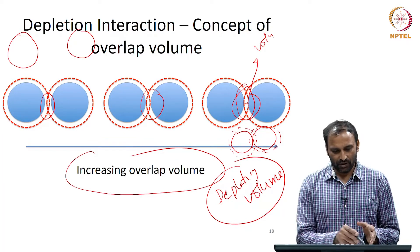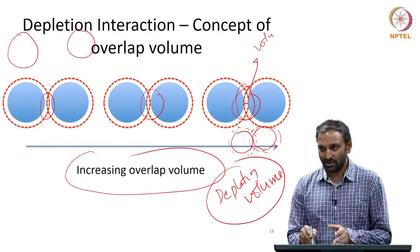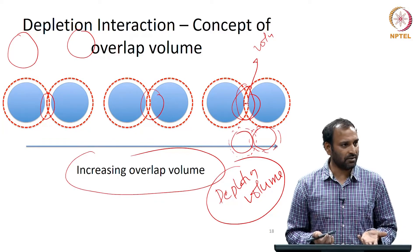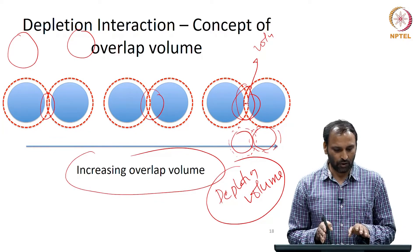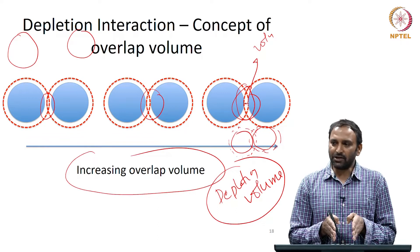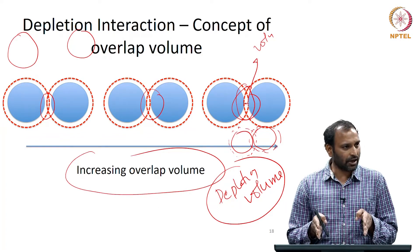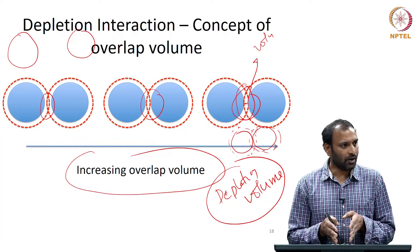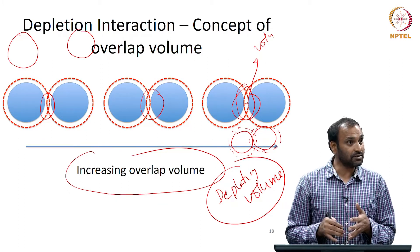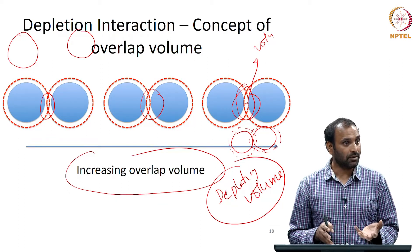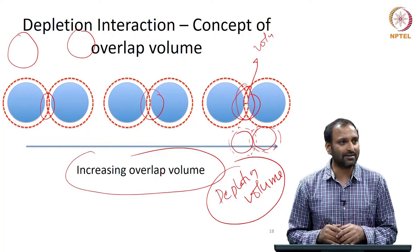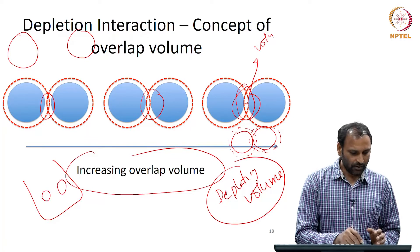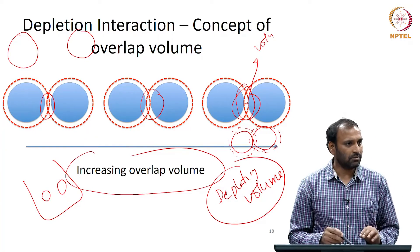The depletion volume increases as I mentioned. What brings the particles together? What brings them to sufficiently small separations? The depletion interactions will kick in only when the particles are sufficiently close. What brings them to such distances is Brownian motion — you are not externally doing anything. You have particles in a fluid, they are jiggling around.